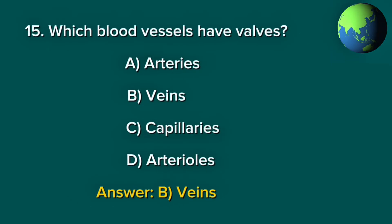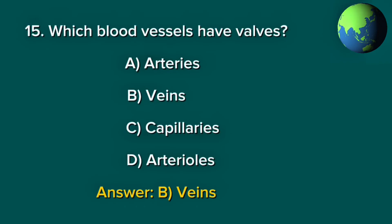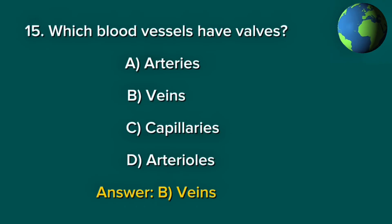Question 15. Which blood vessels have valves? A. Arteries. B. Veins. C. Capillaries. D. Arterioles. Answer: B. Veins.